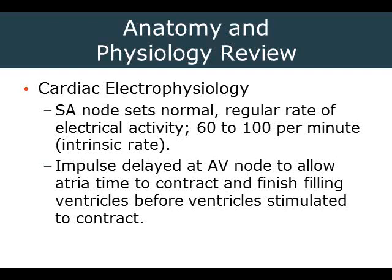If the SA node quits — which does happen — the AV node acts as a backup pacemaker, also called the AV junction, with an intrinsic rate of 40 to 60 beats per minute. A junctional rhythm occurs when the AV junction takes over. If both the SA and AV nodes fail, the Purkinje fibers become the last-ditch pacemaker with an intrinsic rate of 20 to 40 beats per minute — very slow and producing a wide, abnormal rhythm.